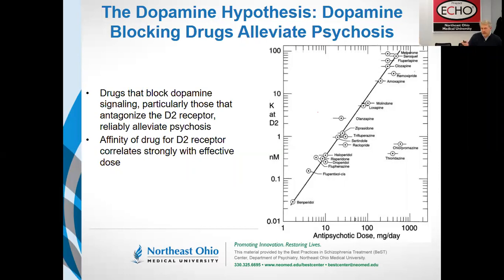On the x-axis, toward the left, represents lower and lower doses. On the y-axis going down represents higher and higher drug affinity. Drugs like brexpiprazole, fluphenazine, or haloperidol that bind the D2 receptor at subnanomolar concentrations require single-digit dosing to be effective. Whereas drugs with double or triple-digit affinity at D2 — like chlorpromazine, quetiapine, or clozapine — require many hundreds of milligrams per day. This tight relationship between D2 affinity and effective dose is pillar number one of the dopamine hypothesis.